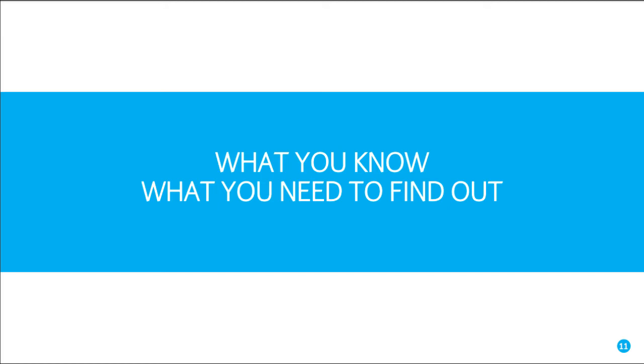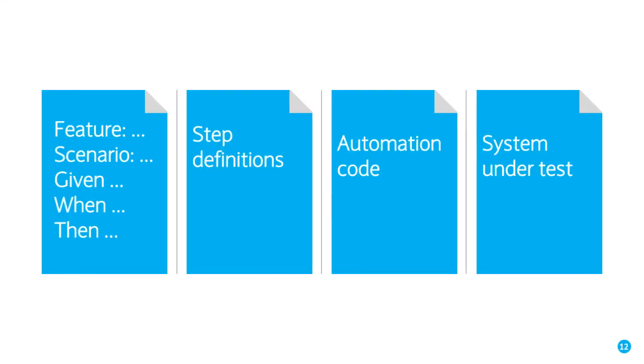As you have a user story, that's just a promise to have a conversation really, hopefully in a forum like Three Amigos. You'll convert that user story into a feature and bump out a load of scenarios with a Given-When-Then format, which effectively makes you create concrete examples which really bring the questions out. That gets converted into step definitions, which gets converted into automation code, which then tests the system under test.